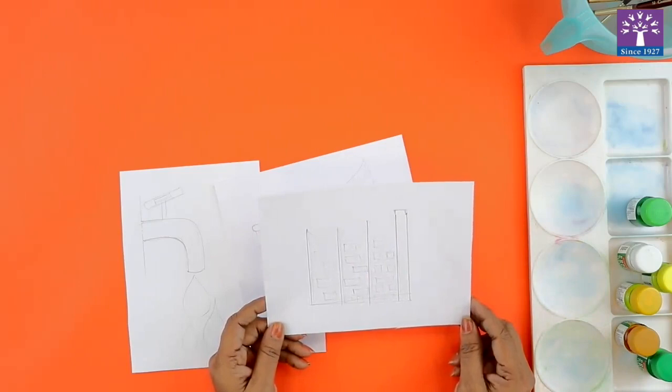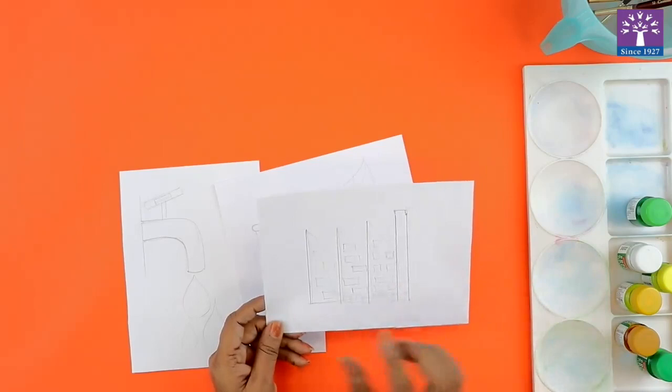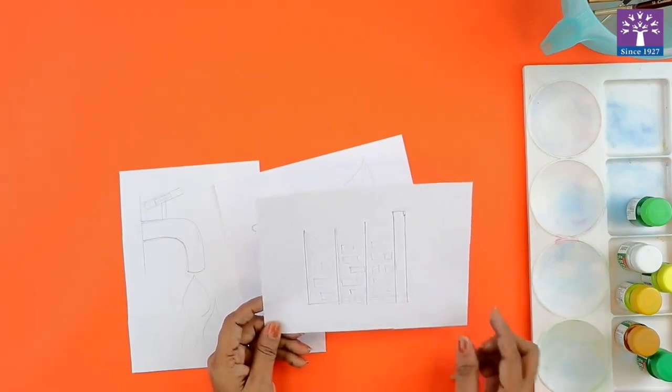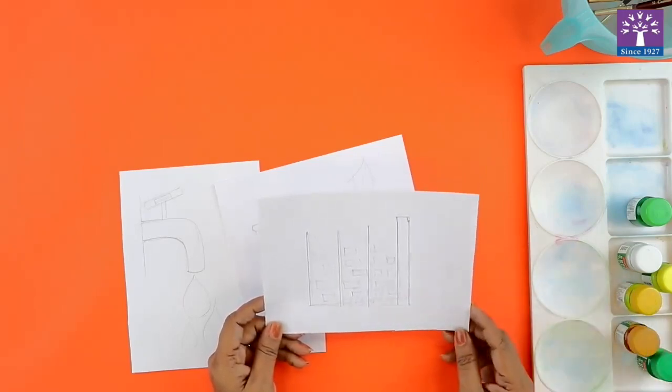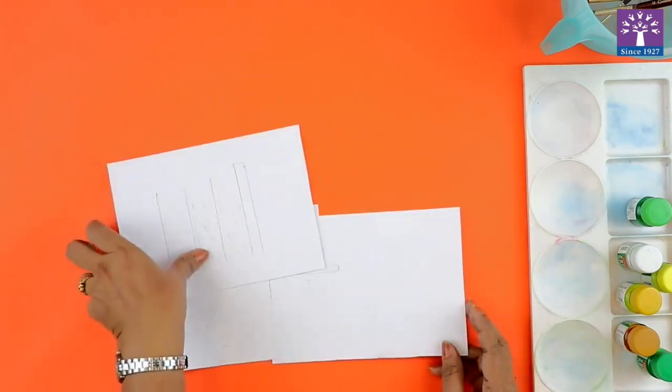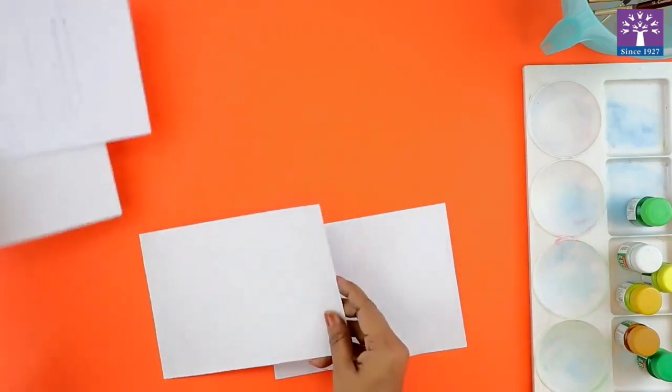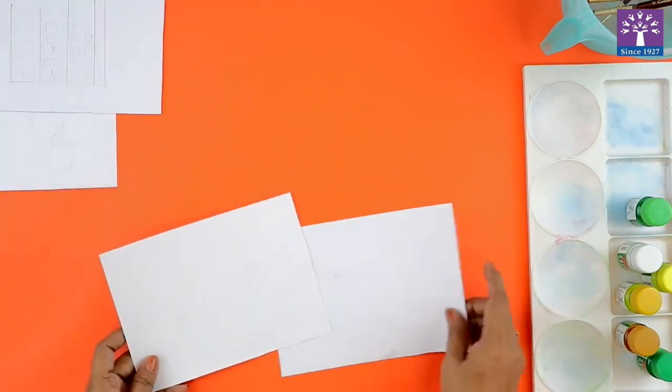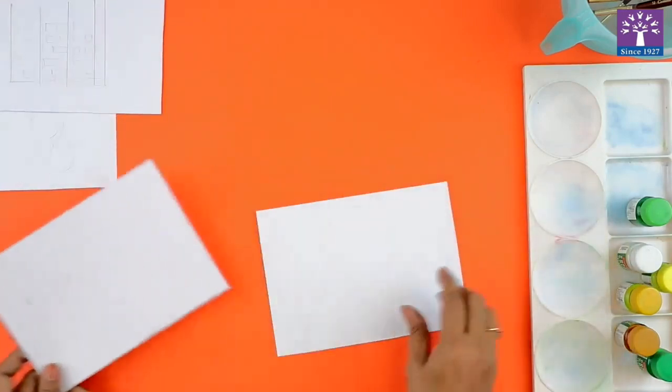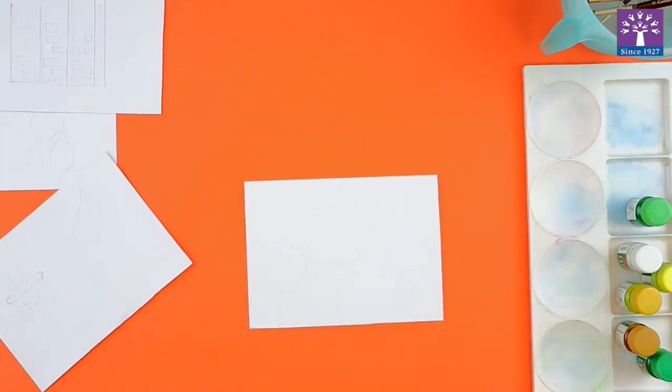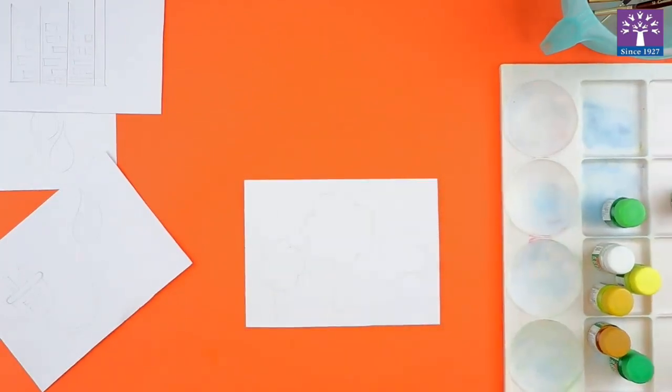So this can symbolize stop pollution. If you want, you can also draw cars or some vehicles which are emitting smoke. Now we will color these icons in different shades of green. That's the reason why the name of our activity is green icons.